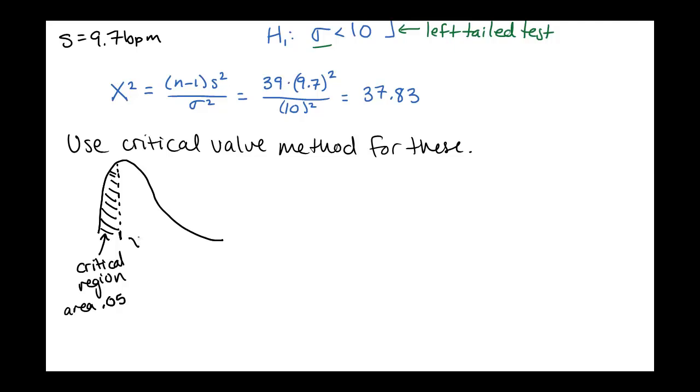And we're going to look in the chi-squared table. Now remember, the areas given in the chi-squared table is the area to the right rather than to the left. So if our area to the left here is 0.05, then our area to the right is 0.95.